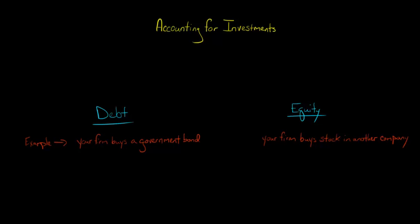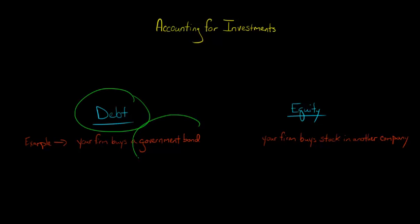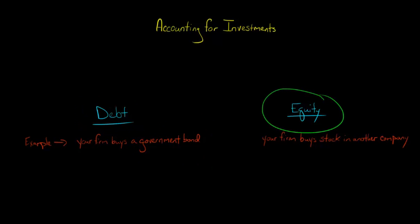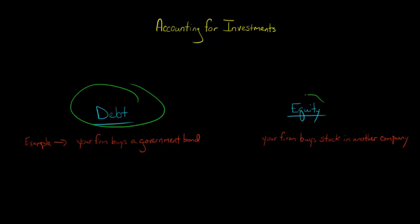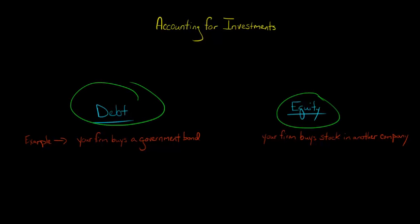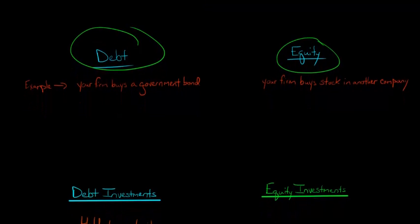In this video, we're going to talk about how to account for investments. The accounting for an investment depends on whether it's a debt investment — like if your company were to purchase a government bond or a corporate bond — or an equity investment, for example, if your company were to buy stock in another company and have ownership shares. Whether it's a debt or equity investment matters because it affects the accounting.